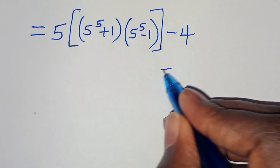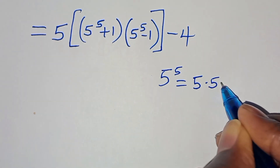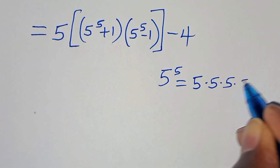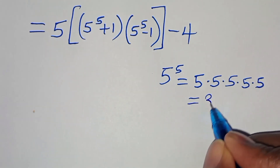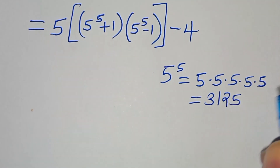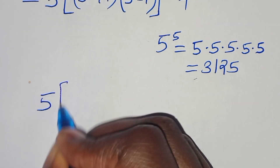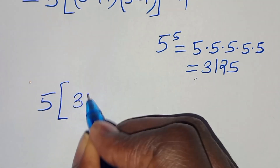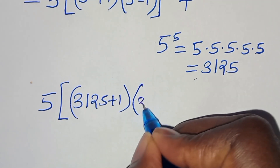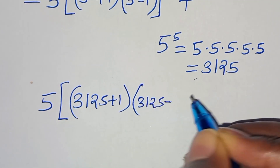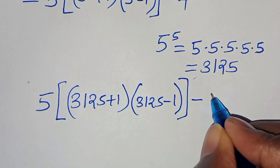Now, 5 to the power of 5 is 5 × 5 × 5 × 5 × 5, which equals 3125. Substituting this, we have 5 times (3125 + 1) multiplied by (3125 − 1), close parentheses, then subtract 4.